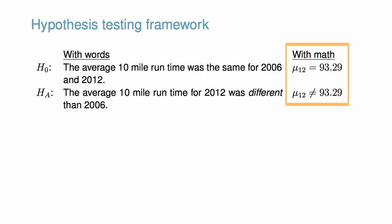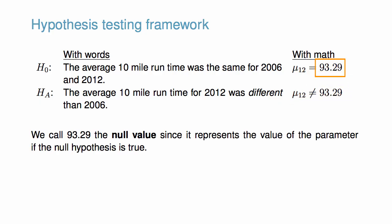These hypotheses can be described in mathematical notation using μ₁₂ as the true population average run time for 2012. The null hypothesis is μ₁₂ equals 93.29 minutes, and the alternative hypothesis is μ₁₂ is not equal to 93.29 minutes. We call 93.29 the null value since it represents the value of the parameter if the null hypothesis is true.